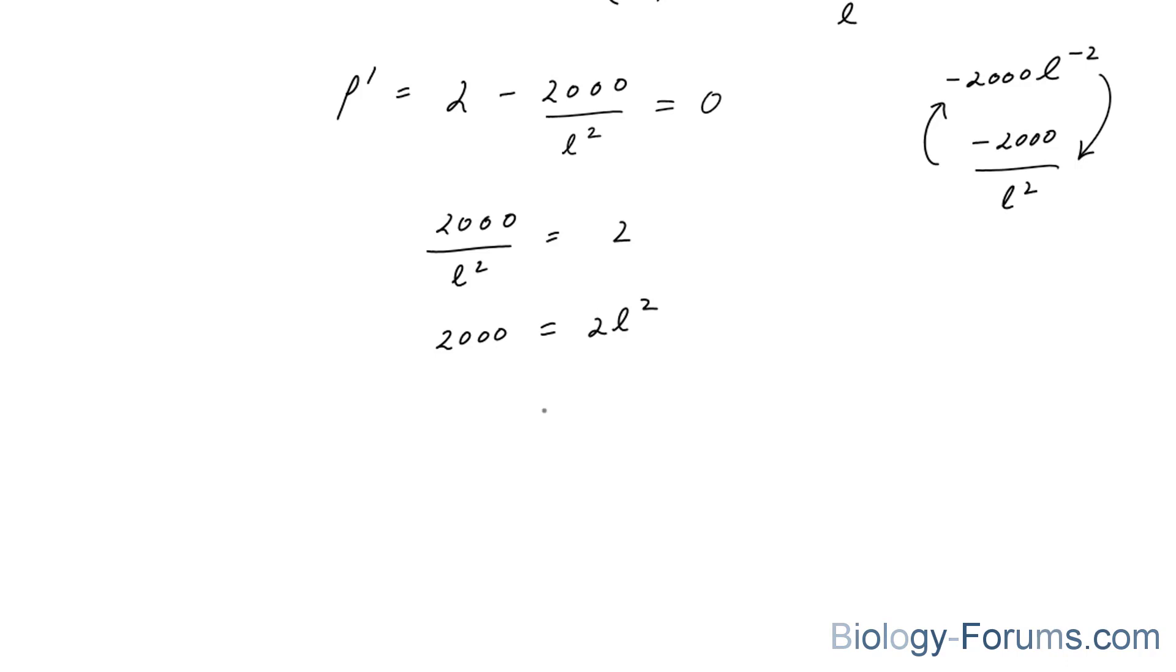Divide both sides by 2 at this point. 2,000 over 2, and then on the right side, we have L squared, so we're going to square root this, and we end up with 1,000 square rooted is equal to L.